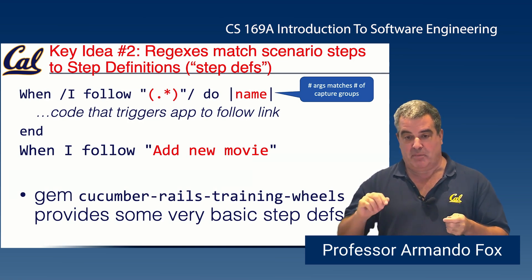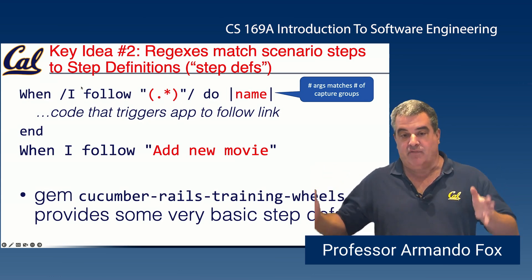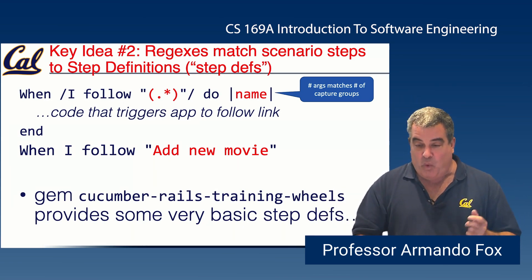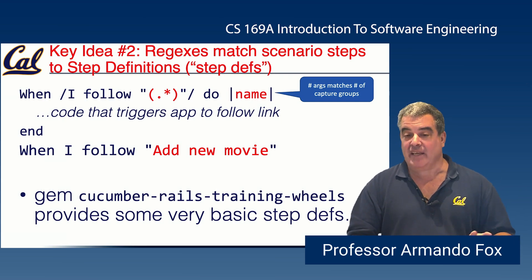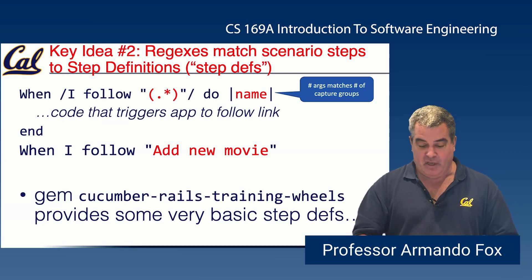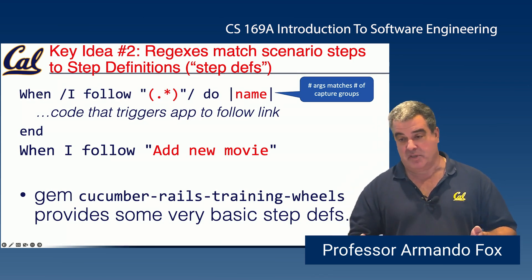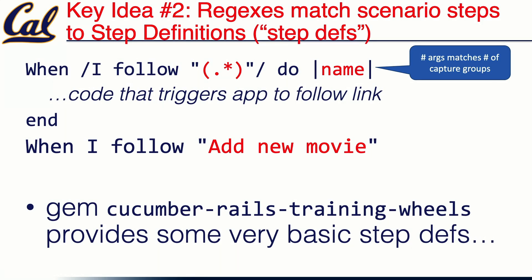The key ideas to remember: the scenario is a bunch of steps beginning with given, when, then, and, or but; the step definitions file contains code where regular expressions are matched to the scenario steps. By the way, given, when, then, but, and are actually aliases of the same method — they exist for readability but are treated exactly the same internally. What matters is readability: 'given' signals a precondition, 'when' signals the action the test is about, and 'then' signals post-condition checks after the when steps have happened.